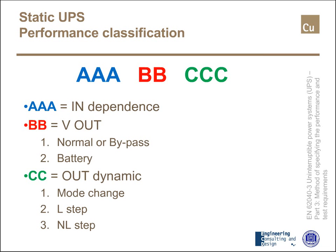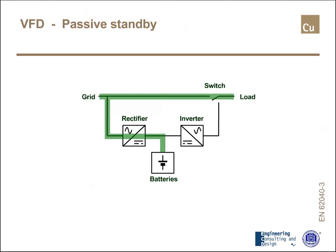The most important characteristics of the UPS are described by the first three letters. So let's go a bit more into detail. The first type of UPS, also historically, is called VSD — that is, voltage and frequency dependent — and the layout is the one represented in the slide.